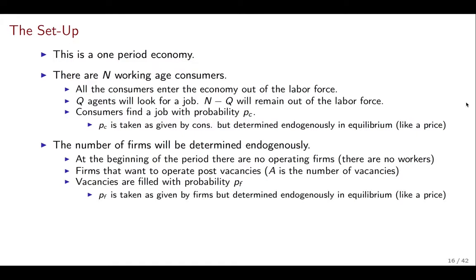Now on the other side of the market there are going to be firms. The number of firms is actually going to be endogenous — we don't know how many firms there are, but what's going to determine that number of firms is going to be the number of vacancies that are created. At the beginning of the period there are no operating firms and no workers. Firms that want to operate are going to post vacancies, and we're going to define by A the number of vacancies, just as in the definitions in the previous video. The same as for workers, vacancies are going to be filled with a probability PF, which firms are going to take as given and we're going to find in equilibrium.